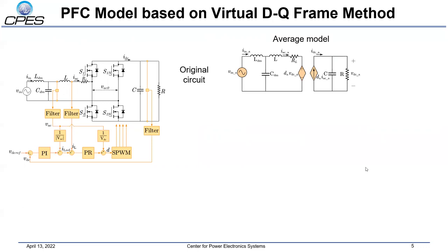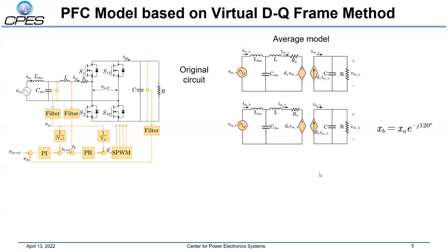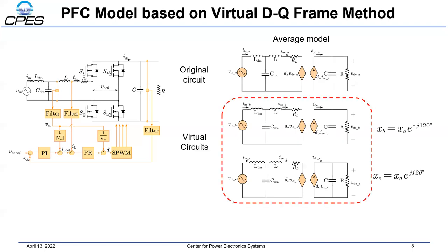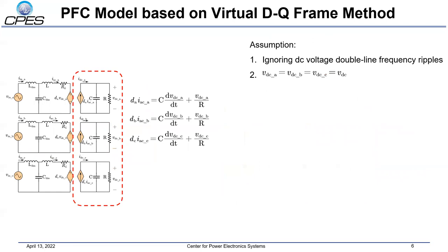For a three-phase converter, a common method for small-signal modeling is to model the converter in the DQ frame because it converts the operating point to DC value and makes the system model amenable to linearization. For a single-phase PFC, a similar modeling method can be used by creating two virtual frames. By phase-shifting all the electrical variables in the original circuit by 120 degrees and minus 120 degrees, virtual phase B and phase C circuits are created for the single-phase PFC. In this model, the double-line frequency ripples of the DC voltage of each circuit are ignored, considering that their magnitude is much smaller than the DC voltage.